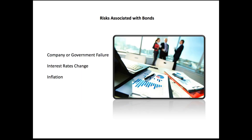Speaking about risks associated with bonds, the first thing to consider is whether the company or government would fail. Going back to Jack's company — even if they got a good interest rate initially, that's a 30-year loan. Fifteen years later, maybe there's new management or a new board of directors. The direction the company has taken might become riskier, and that risk shows up in the market as people trade that bond much lower, anticipating that coupon payments won't be sustained.